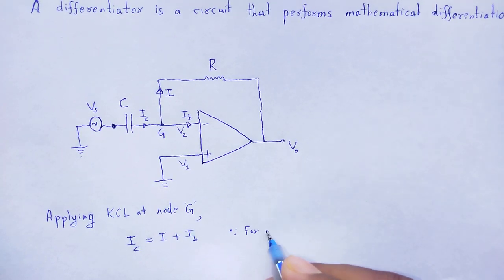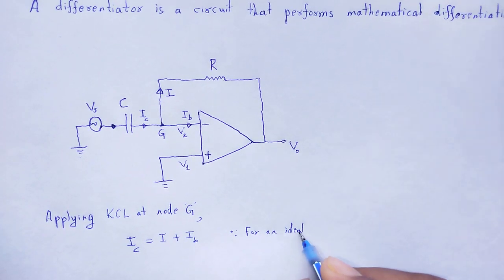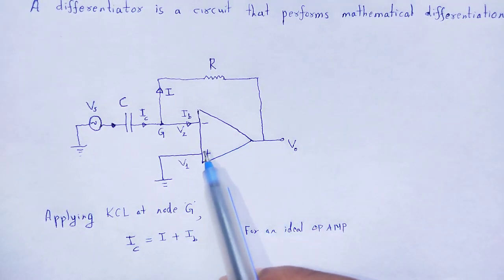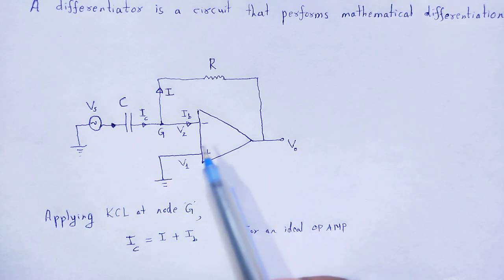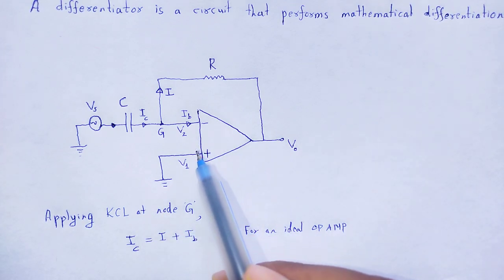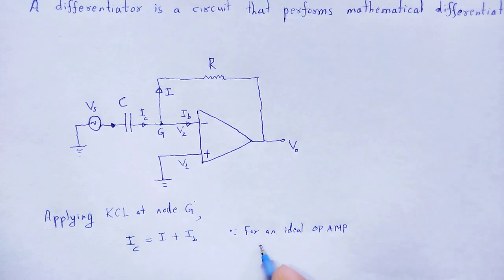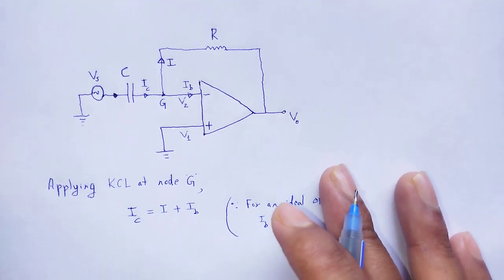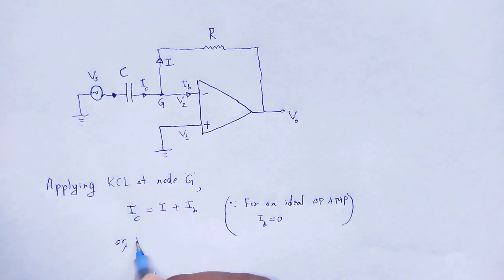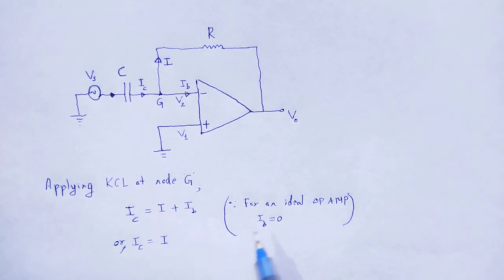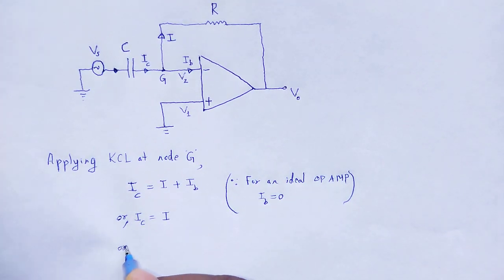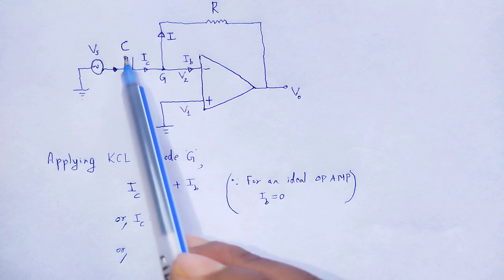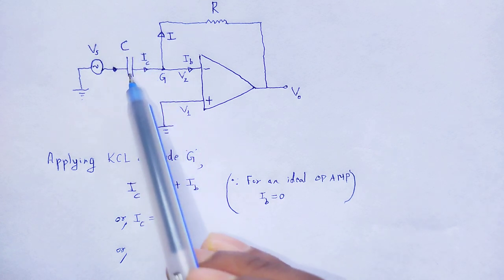For an ideal op-amp, it provides infinite input impedance. Therefore, the current through the op-amp will be zero — meaning IV is equal to 0, so IC is equal to I. That is, the current through the capacitor IC equals the current through the resistor.